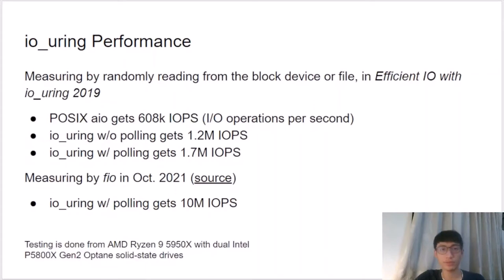We show some performance results from the author of io_uring measured in 2019 using random reads from a block device or file. POSIX AIO achieves 608,000 I/O operations per second. io_uring without polling achieves 1.2 million IOPS, and io_uring with polling achieves 1.7 million IOPS. Statistics measured by FIO in October 2021 show io_uring with polling reaching 10 million IOPS.